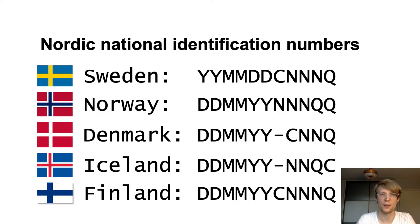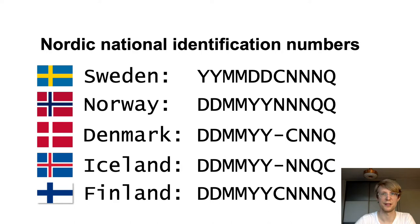First, to put things in context, here you can see numbers from all five Nordic countries. Sweden was the first Nordic country to introduce its national identification number system in 1947, and this influenced other countries in the following decades. You can probably notice these similarities even at a quick glance.